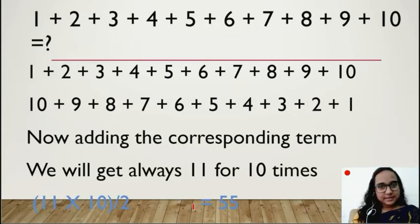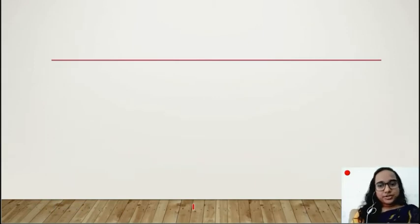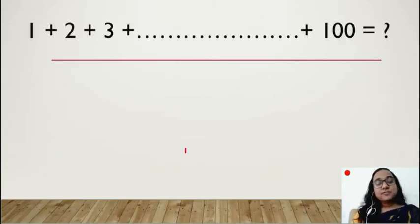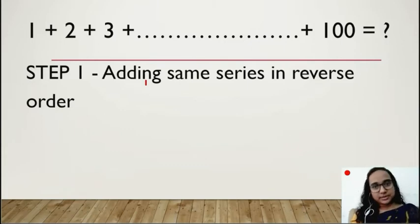Now let's see another example. It will be clearer. What I am going to do is I am going to add first 100 numbers. This is also a series. I am not leaving any numbers, right? I am counting all numbers. So I will put them in reverse order. I will write 1 to 100, then 100 to 1.